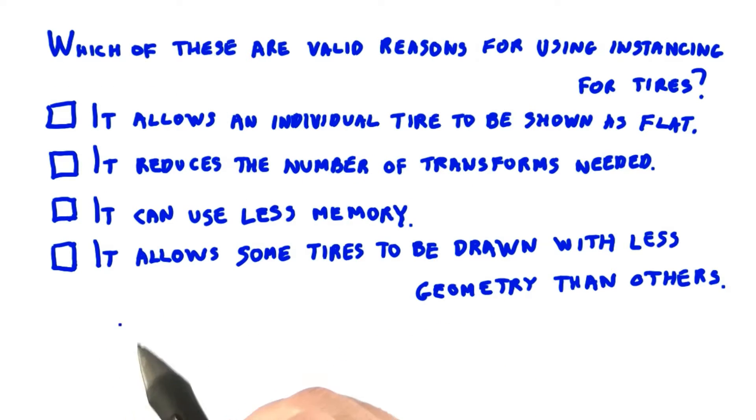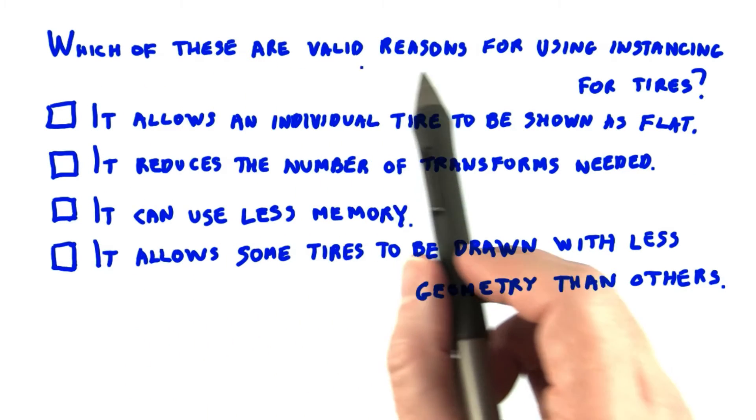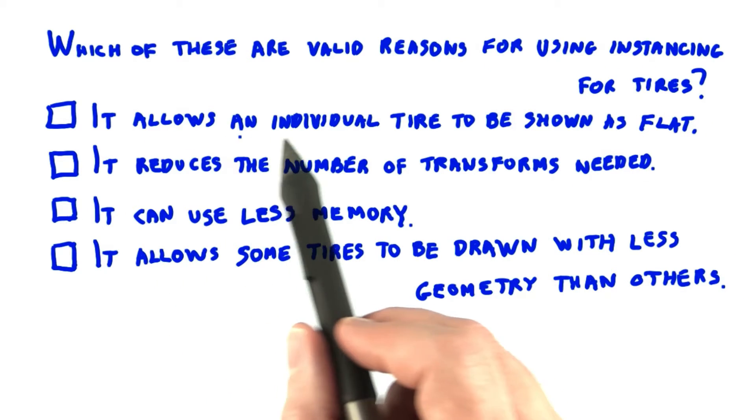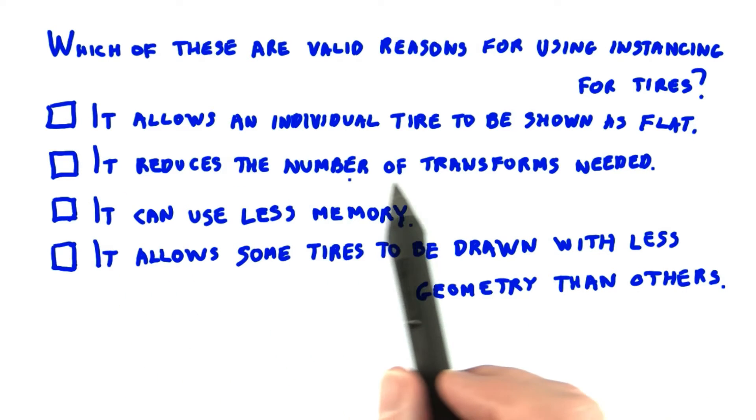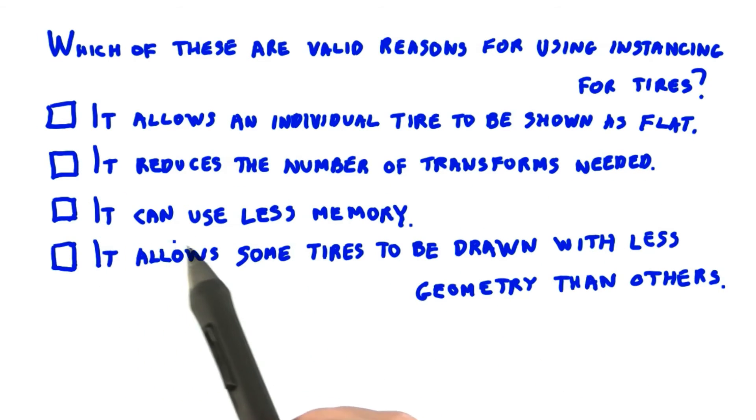Say you have a car model with four tires. The question to you is, which of these are valid reasons for using instancing for tires. It allows an individual tire to be shown as out of air and flat. It reduces the number of transforms needed. It can use less memory. It allows some tires to be drawn with less geometry than others.